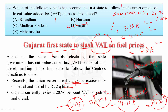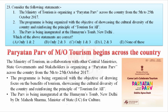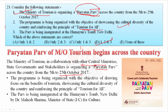Regarding Paryatan Parv: the Ministry of Tourism is organizing Paryatan Parv across the country from 5th to 25th October 2017. The program showcases the cultural diversity of the country and reinforces the principle of tourism for all. The Parv was inaugurated at Humayun's Tomb, New Delhi, by Dr. Mahesh Sharma, Minister of State for Culture (Independent Charge). All three statements about the event are correct.